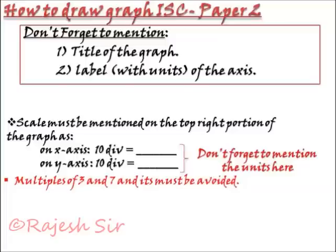Do not forget to mention the proper unit of measurement. For length it has to be in centimeter. For voltage if it is there, it must be in volt. If it is current, it must be in ampere. Now, while taking the units do not forget that multiples of 3 and 7 must definitely be avoided. You can take a multiple of 2, 5, 10, all these multiples are acceptable but the multiples of 3 and 7 must be avoided.